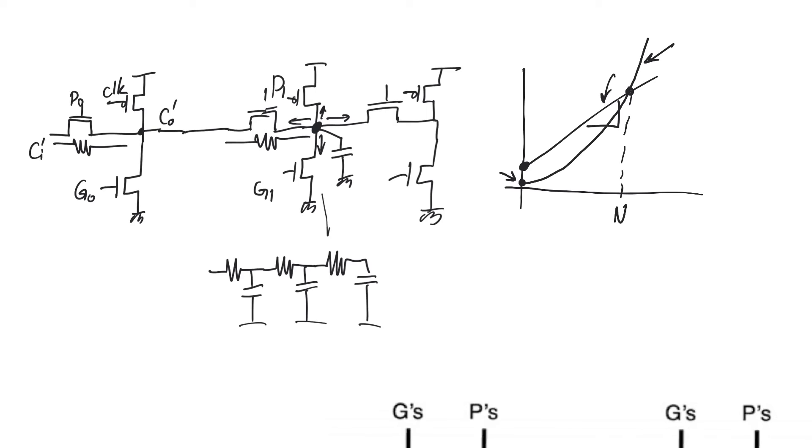Its delay will increase above that of the ripple carrier real quick, so that very quickly it loses any kind of appeal. But for some interval of n, the Manchester carry chain without intervening buffers, even with its quadratic growth, has some appeal because of its very simplicity that keeps its y-intercept small.